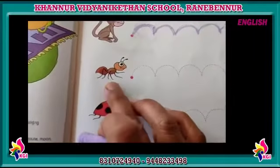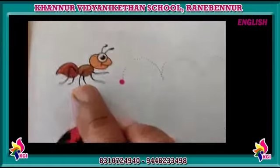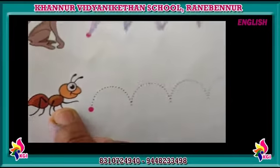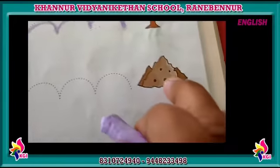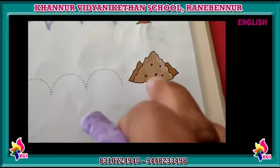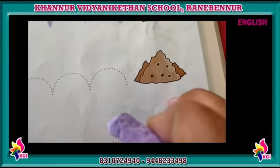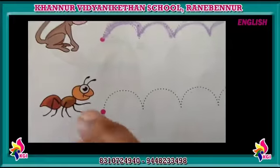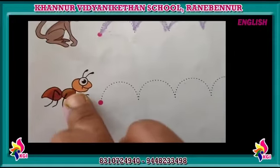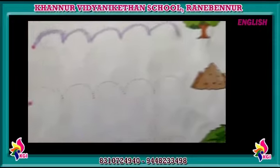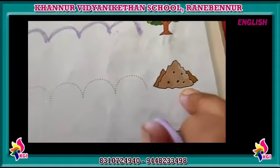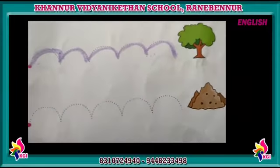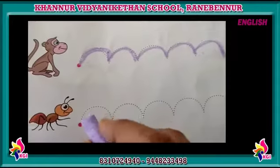What is this kids? Ant. A for ant. And what is this? Yes, this is ant hill. Like this — this is an ant, this is an ant hill.